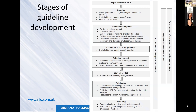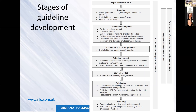There are clear stages of guideline development. It starts with a specific topic decided by NICE, then a scoping phase where the developer drafts the questions. During guideline development, review questions are agreed, a literature search is conducted, and there's a call for evidence from stakeholders if needed. The evidence is reviewed and an economic analysis is prepared. The committee discuss the evidence, consult on a draft guideline, revise it, sign off at NICE, and then it is published and regularly updated.